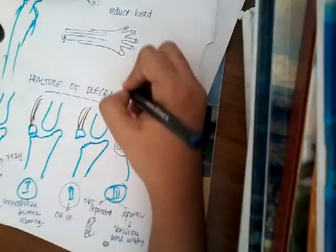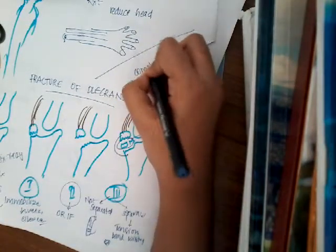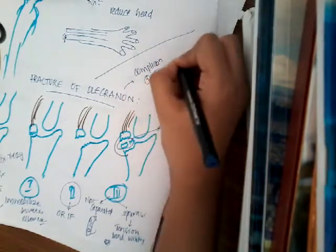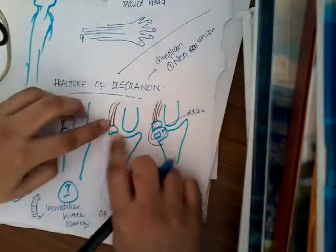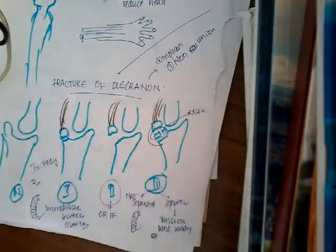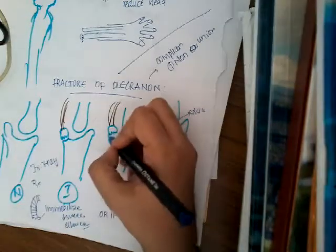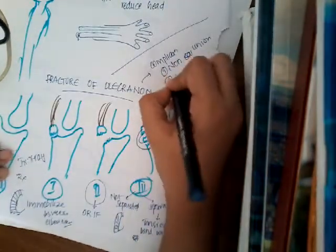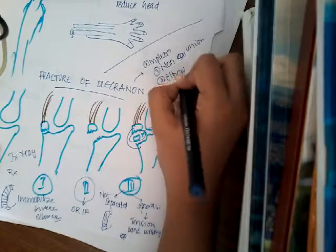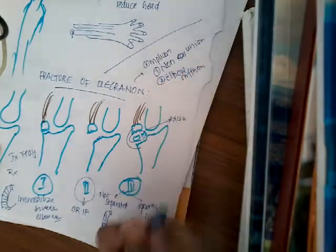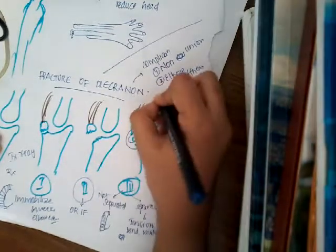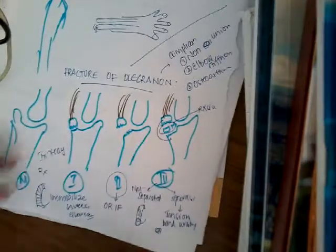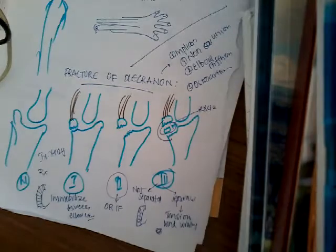The complications of fracture of the olecranon process are: first, non-union — this occurs when there is displacement and you did not do ORIF, and instead only immobilized it, leading to callus formation over the bone ends resulting in non-union. Second, elbow stiffness, which requires physiotherapy. Third, osteoarthritis, which also requires physiotherapy. This is how you treat fracture of olecranon process. Thank you for watching.